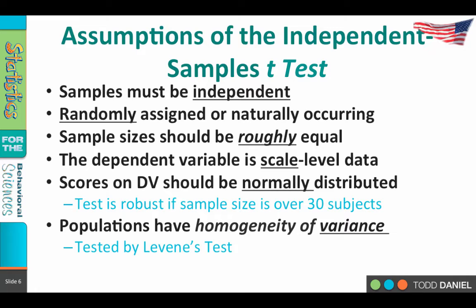The scores on the dependent variable should be normally distributed. Sometimes the scores are not perfectly normally distributed, but if we have enough subjects, then the t-test is robust — meaning that if this assumption is violated, we can still use the t-test. It is robust to violations of the assumption of normality. However, it is only robust if you have a large enough sample size — you need at least 30 subjects. If you have a small sample size and the scores are not normally distributed, you're probably going to make an error.